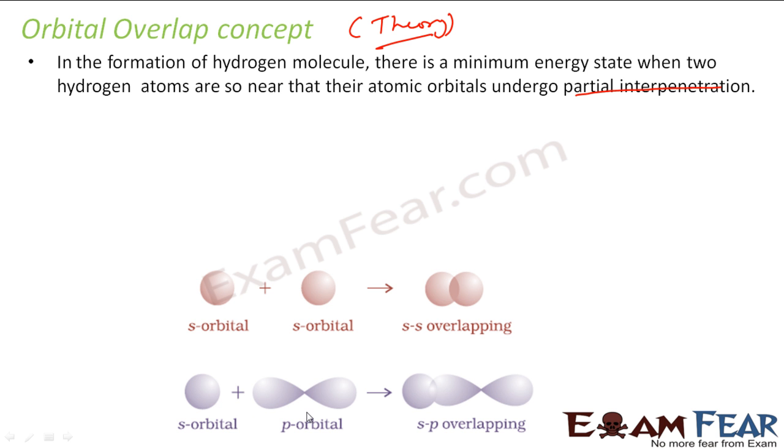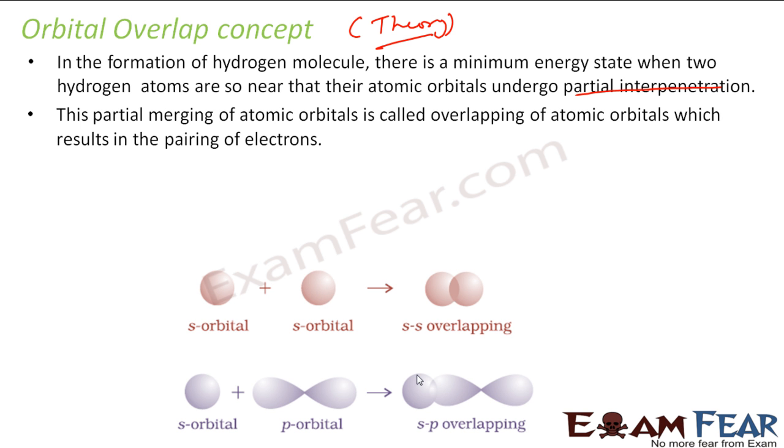If an s orbital overlaps with a p orbital, then also we have some overlapping. Overlapping is nothing but interpenetration of orbitals, partial interpenetration or partial merging of orbitals. This is called overlapping of atoms.